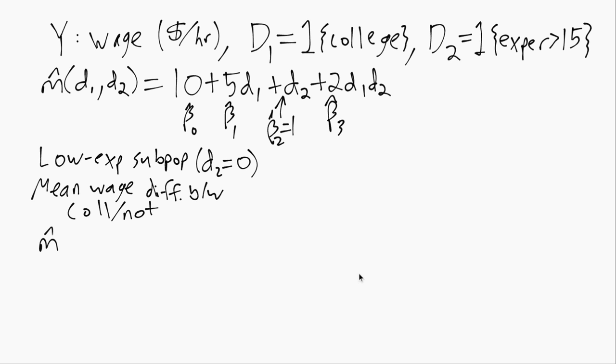So we'll have M hat(1,0) minus M hat(0,0). If we plug in those numbers, when we have M hat(1,0), we always get this first beta naught term—we always have the 10. Then when D1 equals 1, we'll get the beta hat 1 term, the 5. But if D2 equals 0 like we have here, we will not get either of the other terms—we'll just get 0s for those. So this is our M hat(1,0).